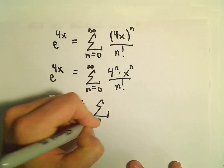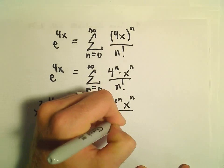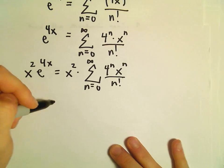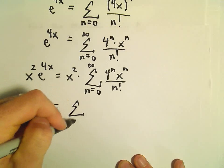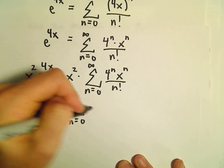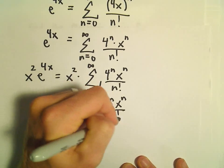So then we have our series expansion still, 4 to the n, x to the n over n factorial. But we can actually multiply the x squared inside of the summation. So then we would have x squared times 4 to the n times x to the n over n factorial.